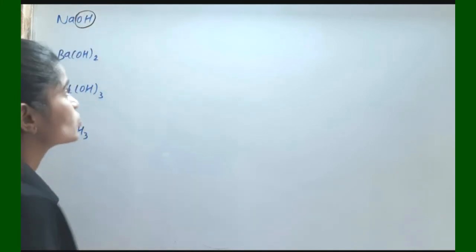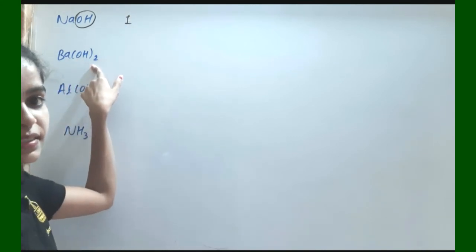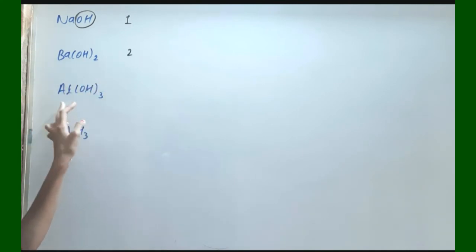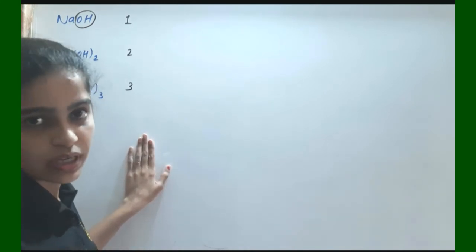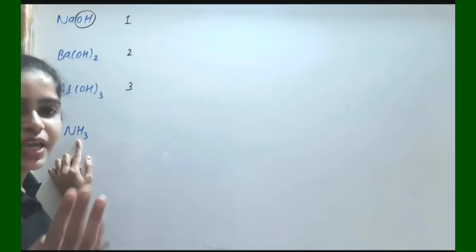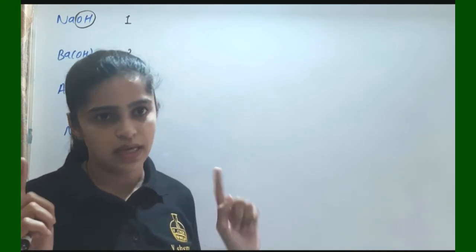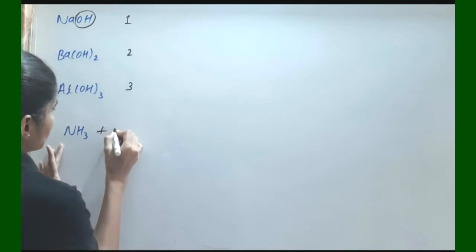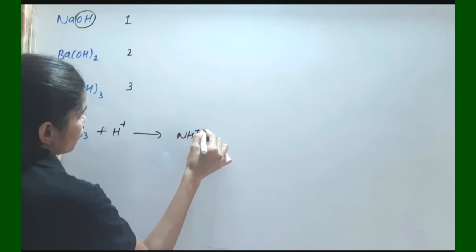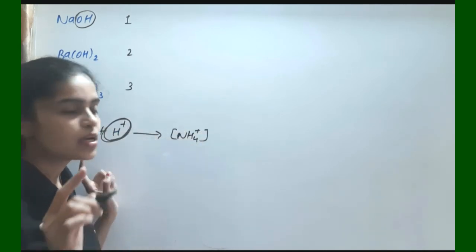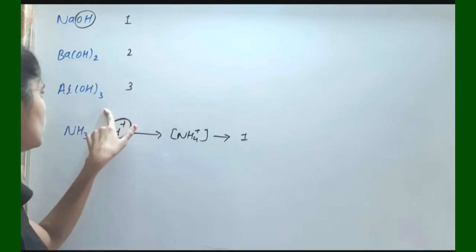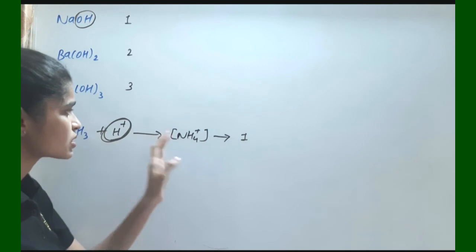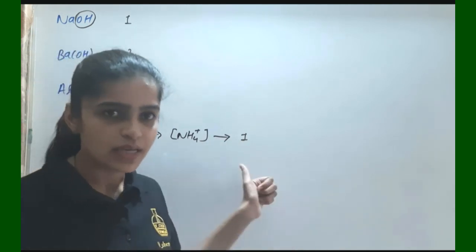For bases: NaOH has only one OH⁻ replaceable by acid, so its acidity is equal to 1. Ba(OH)₂ has two OH⁻ easily replaceable, so its acidity is 2. Al(OH)₃ has acidity of 3. For NH₃, though 3 hydrogens are present, ammonia is a base, not an acid. Ammonia accepts H⁺ and converts to NH₄⁺ — it accepts only one H⁺, so its acidity is equal to 1.